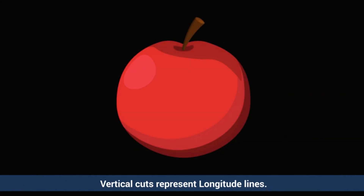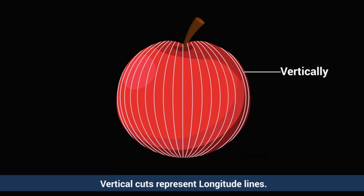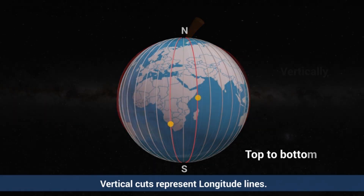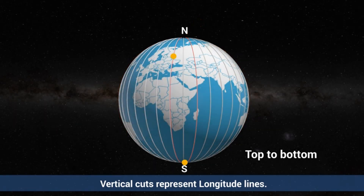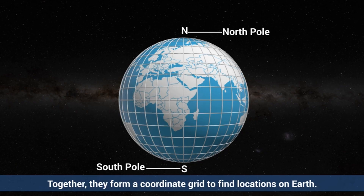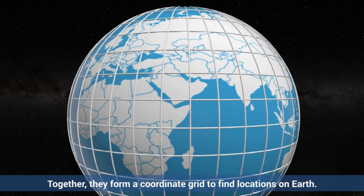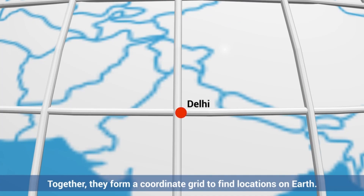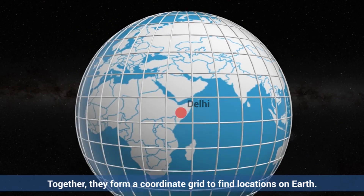Now, if you slice the apple vertically, those lines run from top to bottom, just like longitude lines running from the north pole to the south pole. Together, these slices form a grid system, allowing us to pinpoint any location on earth using latitude and longitude coordinates.